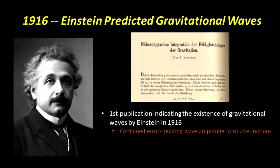In the 1930s, Einstein wrote a paper — luckily never published — entitled 'Do Gravitational Waves Exist?' By the time it was published, he changed the title and published it in a different journal because physical review had questioned the paper. Eventually he published it as a more rigorous way to look at gravitational waves, but he doubted it.